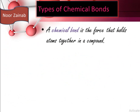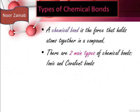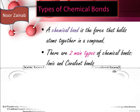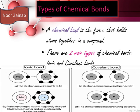A chemical bond is a force that holds atoms together in a compound. There are two main types of chemical bonds: ionic and covalent bonds. In an ionic bond, the electron moves from one atom to another. For example in NaCl, an electron moves from sodium to chlorine, forming a positively charged sodium ion and a negatively charged chlorine ion which attract each other. In a covalent bond, electrons cannot move independently — they are shared pairs between bonded atoms.